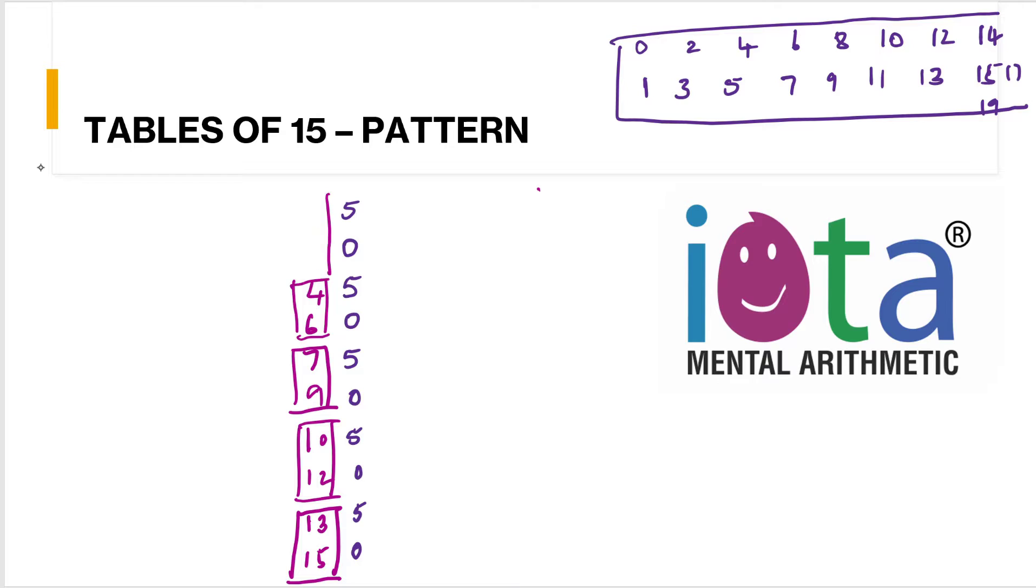I will explain again, students. First write down this - write down 5, 0, 5, 0, 5, 0, 5, 0, 5, 0 like this. After that, what you do is start writing the odd numbers 1, 3 first.